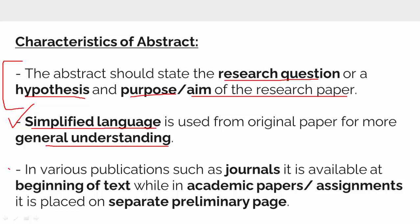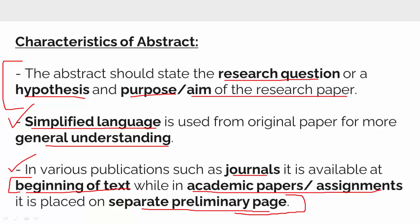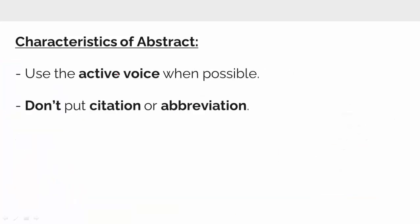In various publications such as journals, the abstract is available at the beginning of the text, while in academic papers or assignments it is placed on a separate page. In the abstract, it is generally intended to use active voice wherever possible, and do not put a citation or abbreviation in the abstract.